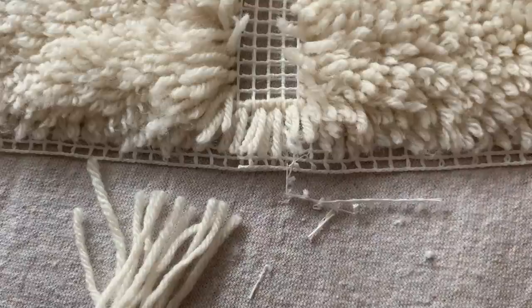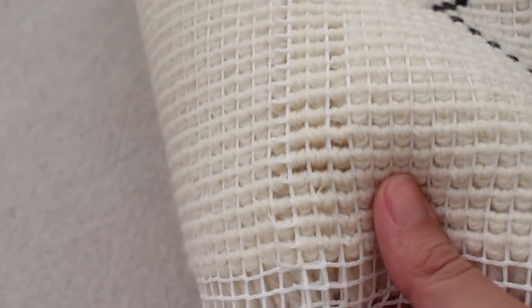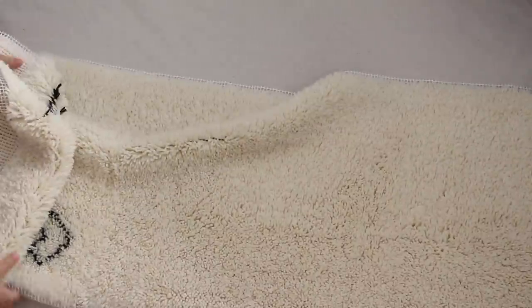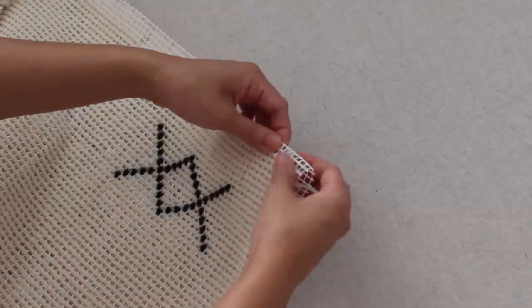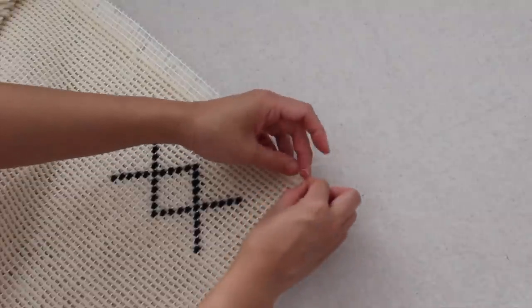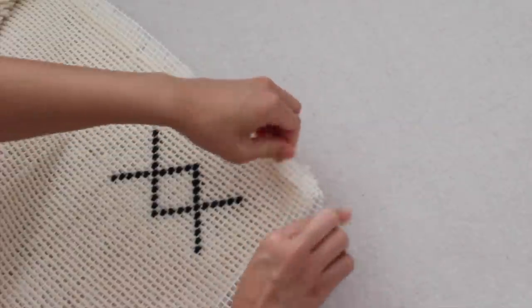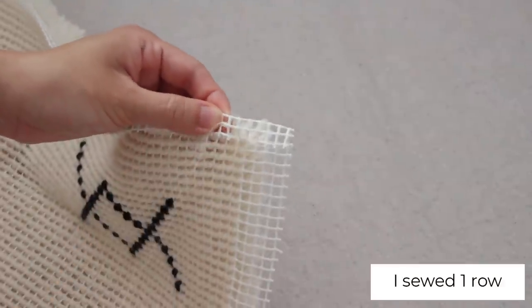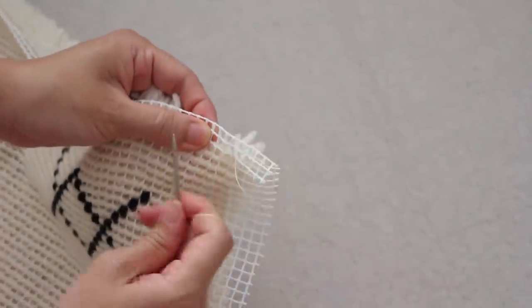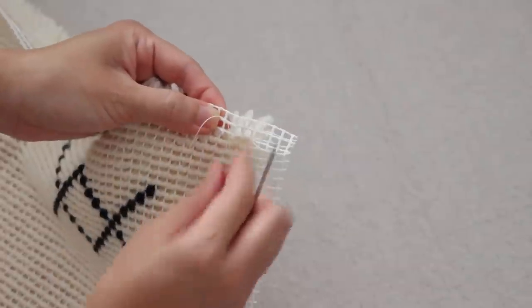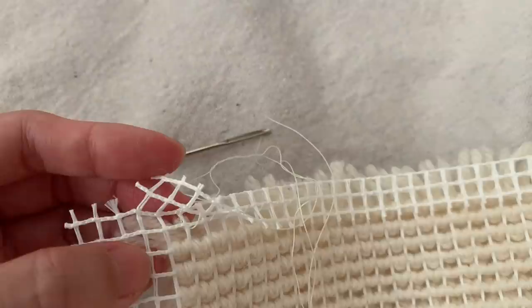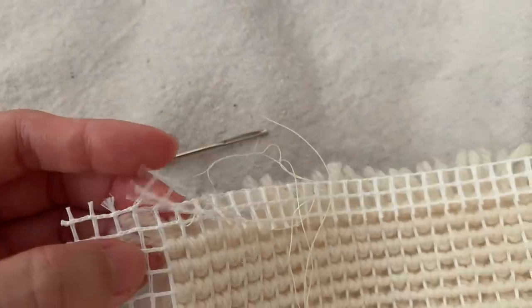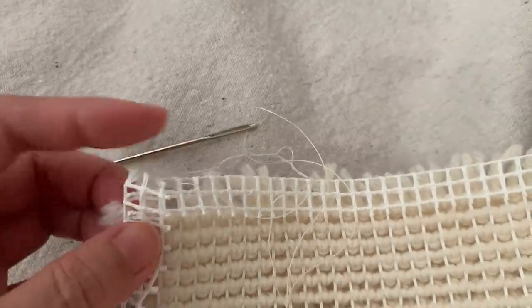Then I attached the yarn through both layers. For the edges, I folded over 2 rows and sewed the 2 layers together using a whip stitch. I cut the corners and overlapped the sides. You could do this step at the beginning of making a rug if you already know how big you're going to make it.